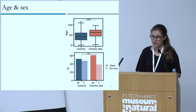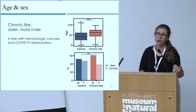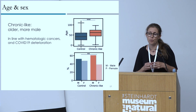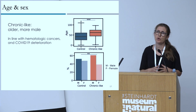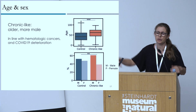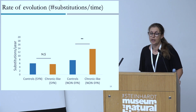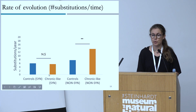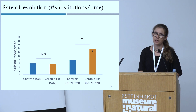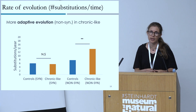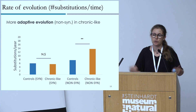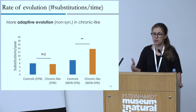Third, age and sex: the chronic-like clades are older and more male, which is in line with hematologic cancers — the main category — which tend to occur in older males. This also aligns with COVID-19 severity patterns, since we expect to capture cases from hospitalized patients who are monitored across time. Fourth, the rate of evolution: we see a similar synonymous rate of evolution — a proxy for neutral evolution — whereas we see a higher non-synonymous rate of evolution in our chronic-like set, which is a marker of adaptive evolution with more protein-altering spike mutations.